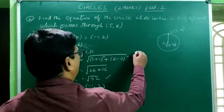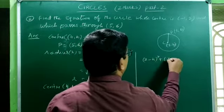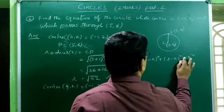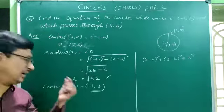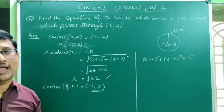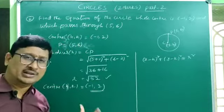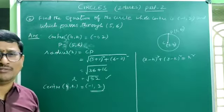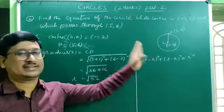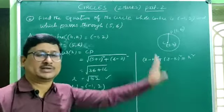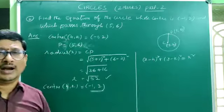Using the formula for the equation of a circle with center (h, k) and radius r: (x−h)² + (y−k)² = r². The equation of the circle whose center is (h, k) and radius r is (x−h)² + (y−k)² = r², where (h, k) is the center and r is the radius.